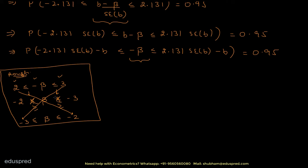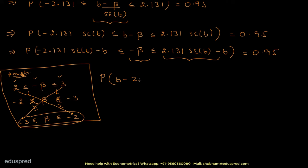Applying this, the final confidence interval expression becomes: b − 2.131·SE(b) ≤ β ≤ b + 2.131·SE(b), with probability 0.95. Now we just need to substitute the values of b and SE(b).